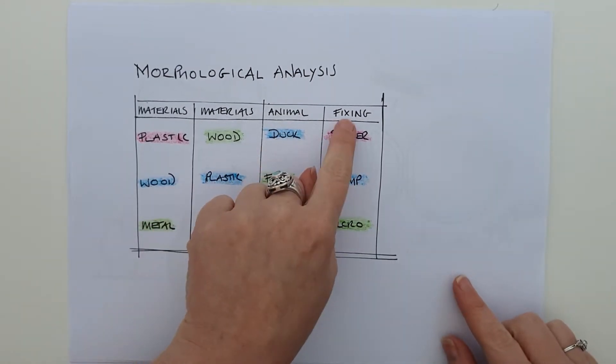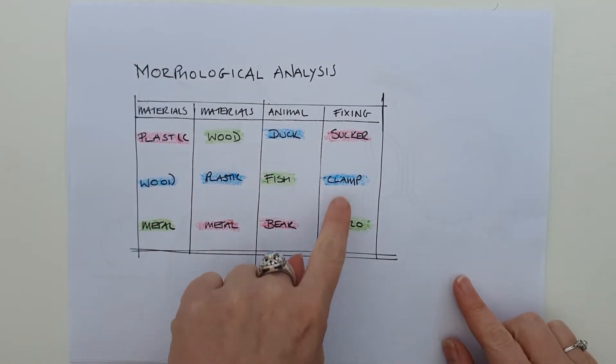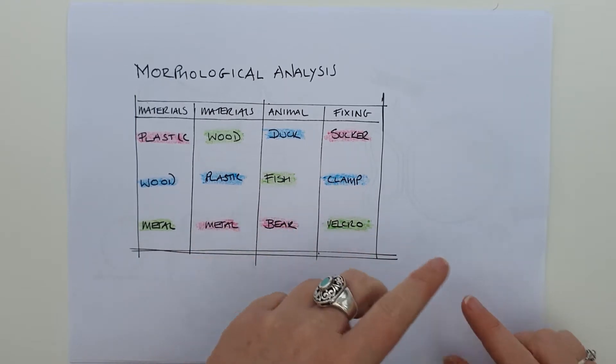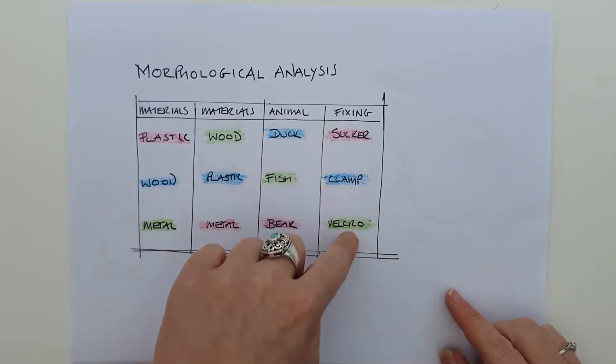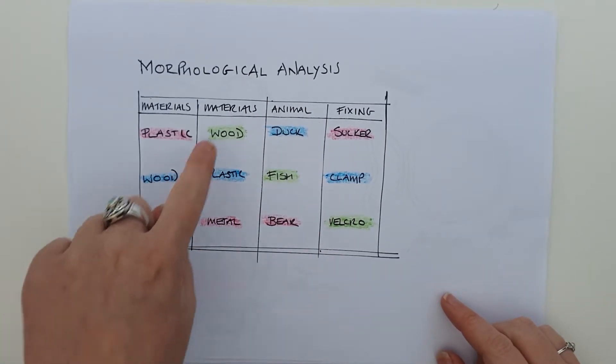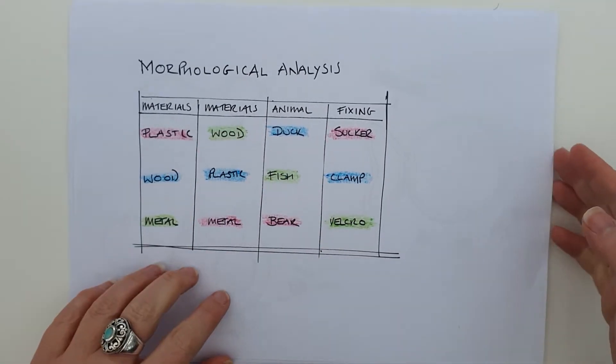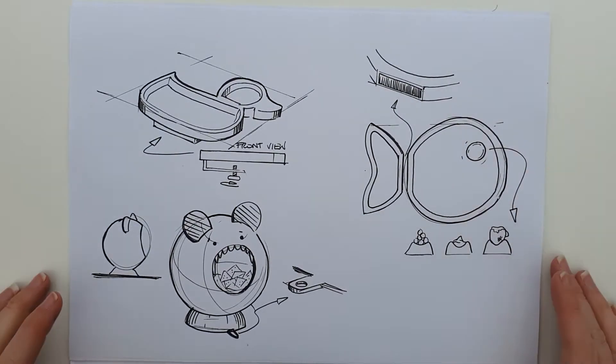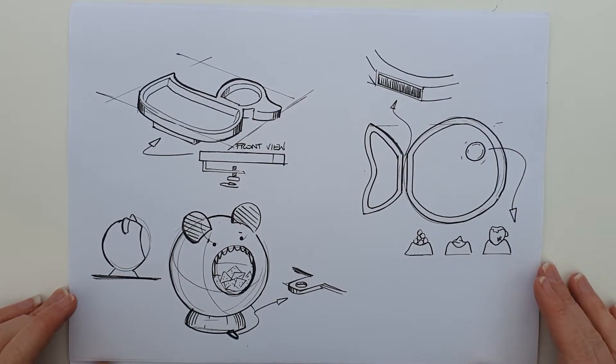I've decided it's going to be an animal because we had to make it fun for kids, and kids and babies love animals. I've looked at different fixings because one of the parts of the brief said it needs to be fixed to the table in some way, so I've explored a couple of those.